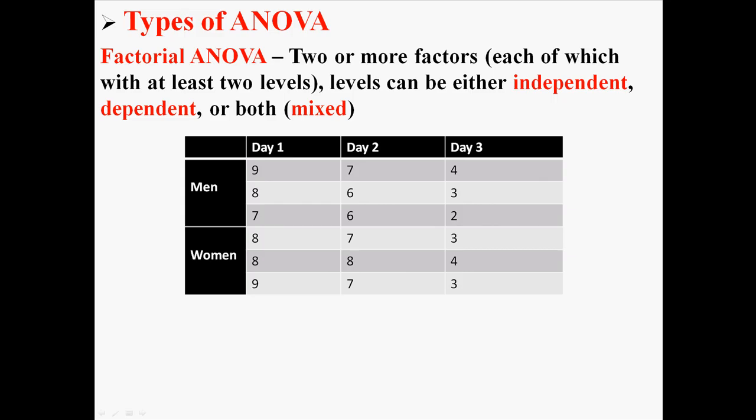The levels can be either independent, dependent, or both. If they're both, it's called a mixed factorial design. So here's a design that has two variables. One is gender, men and women, and one is day: day one, day two, day three. So that's two factors, one has two levels, and one has three levels. That's a factorial ANOVA.